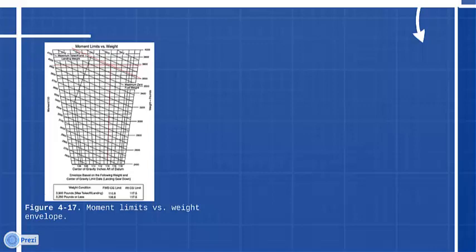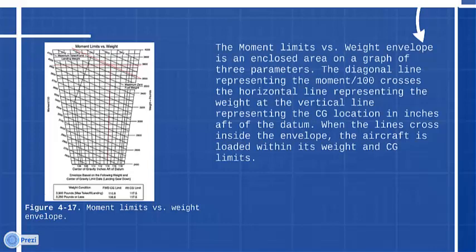The moment limits versus weight envelope is an enclosed area on a graph of three parameters. The diagonal line representing the moment divided by 100 crosses the horizontal line representing the weight at the vertical line representing the CG location in inches aft of the datum. When the lines cross inside the envelope, the aircraft is loaded within its weight and CG limits.